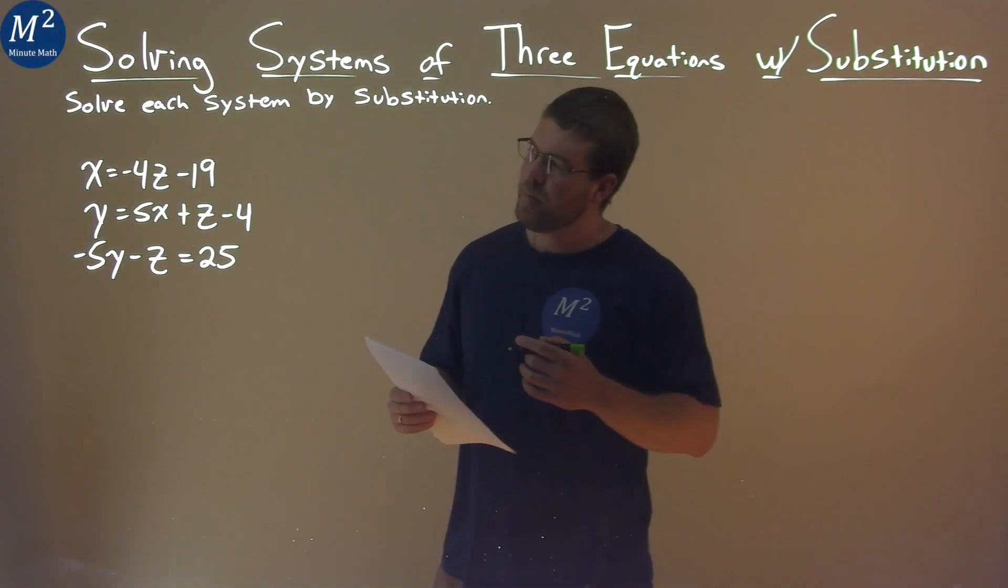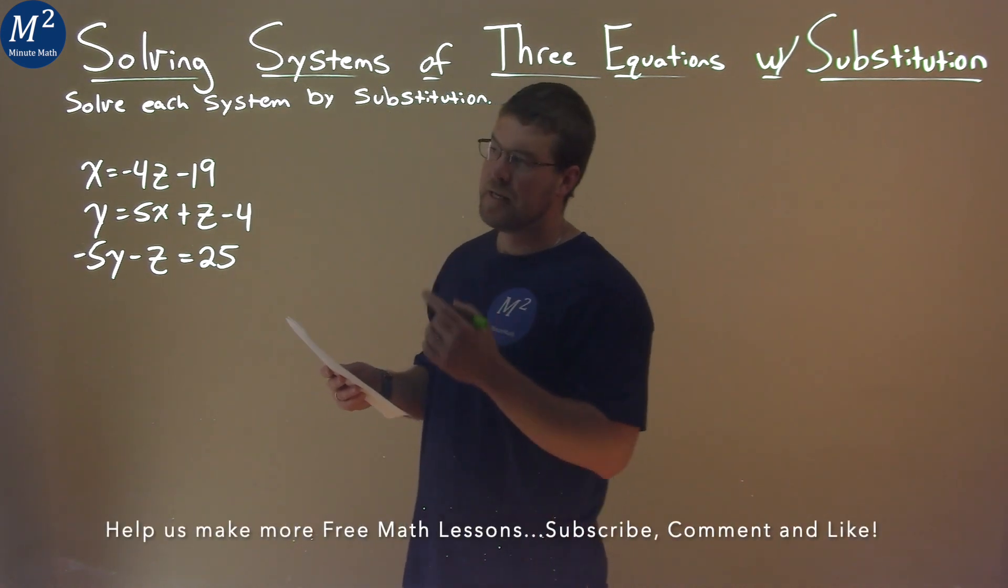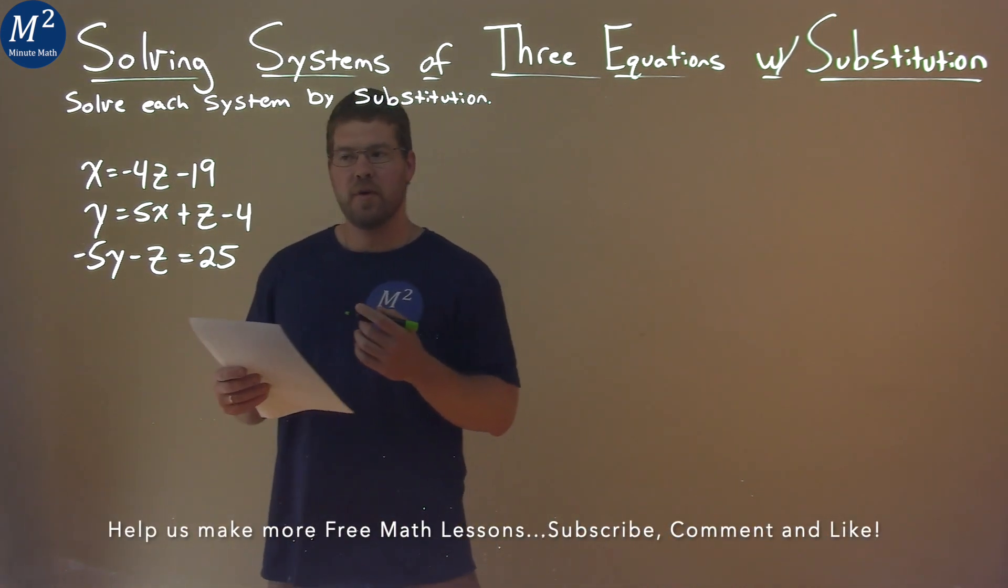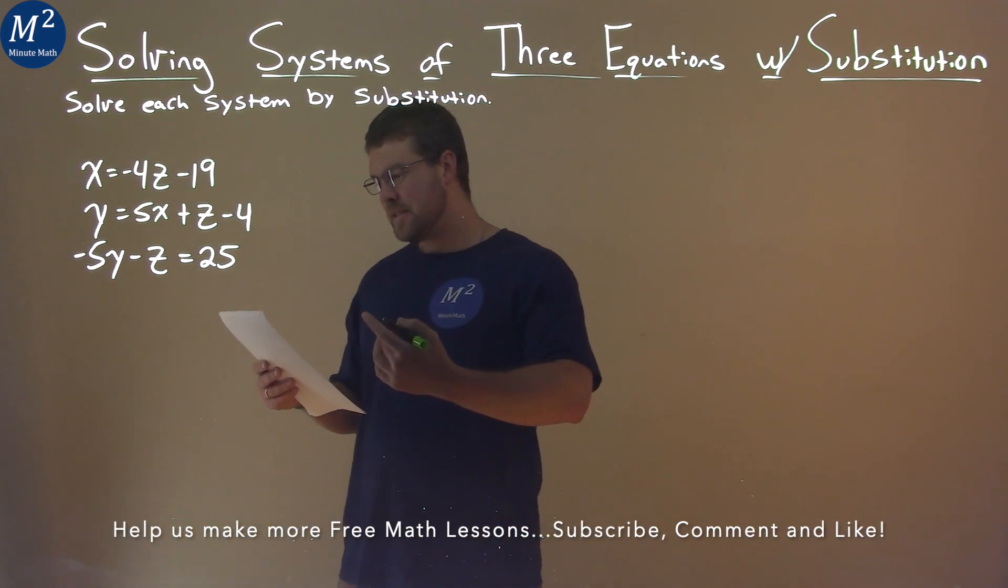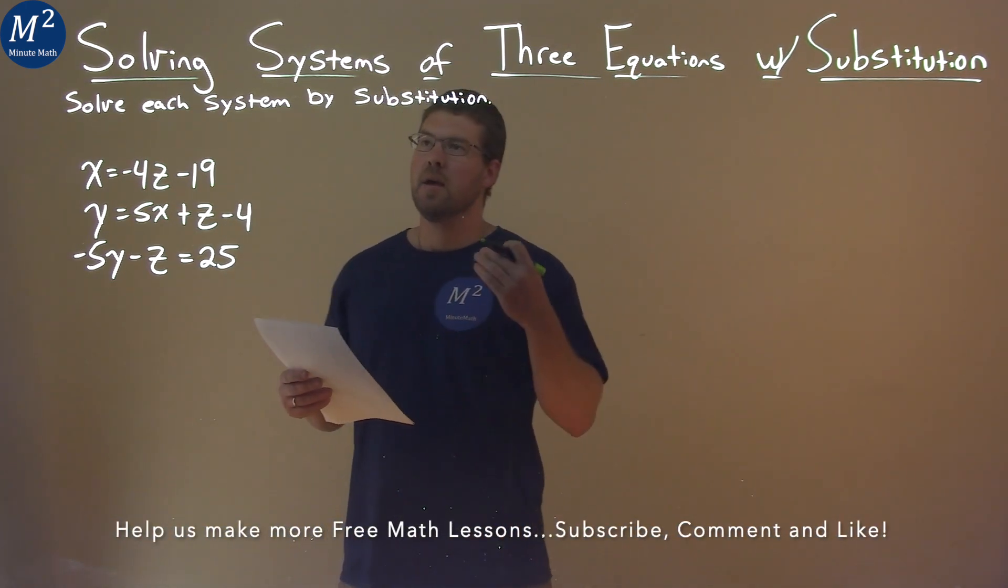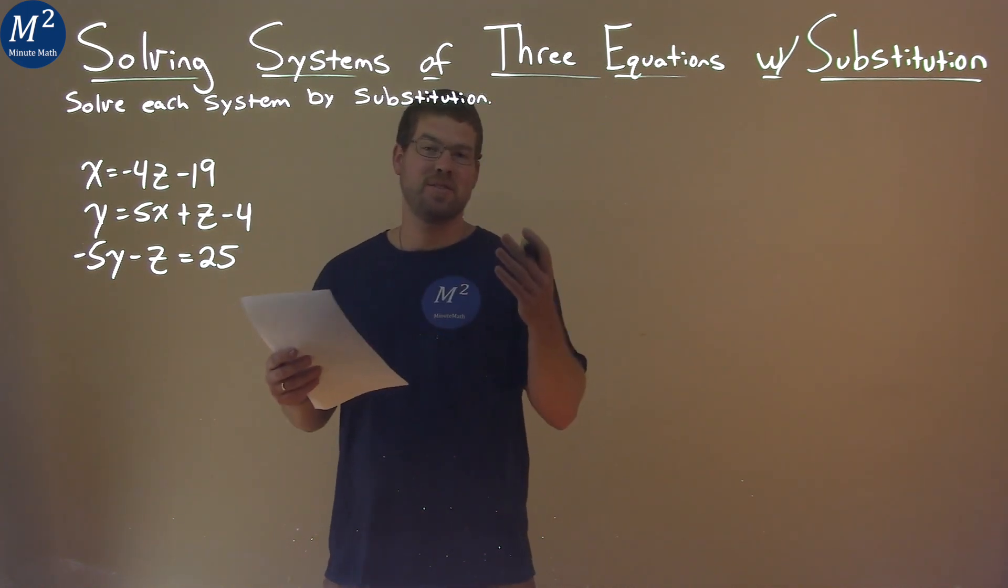We're given this problem right here: x equals negative 4z minus 19, y equals 5x plus z minus 4, and negative 5y minus z equals 25. We want to solve this system by substitution.